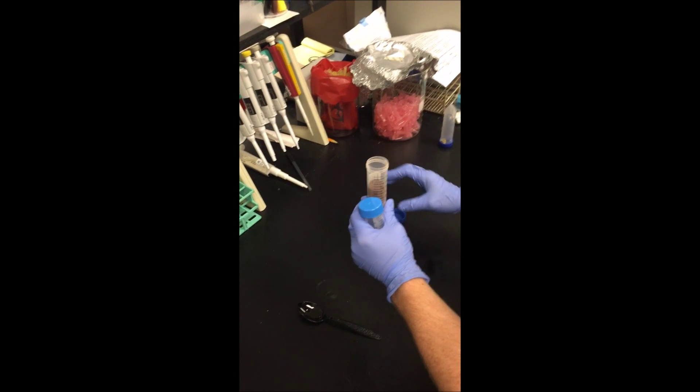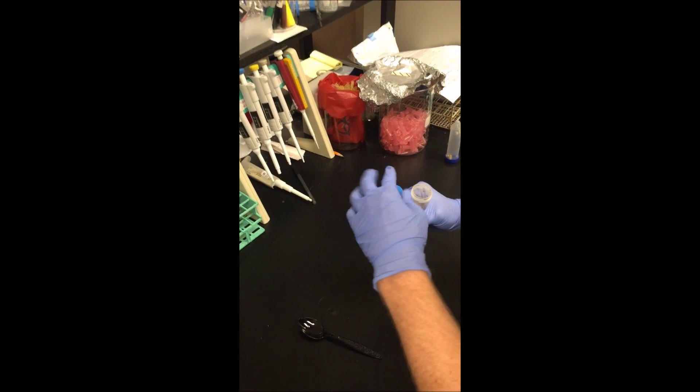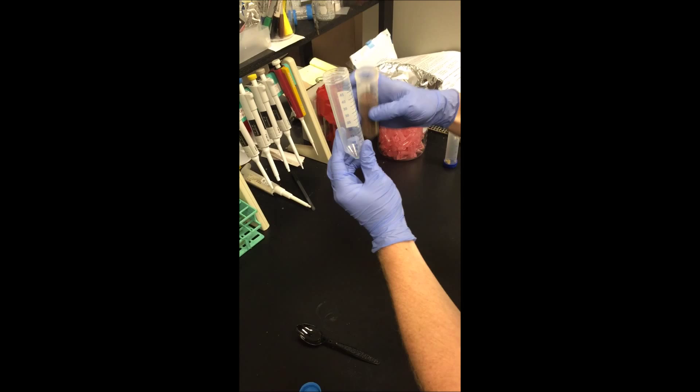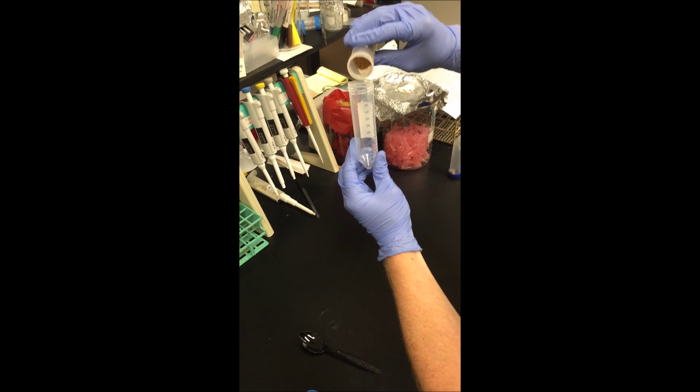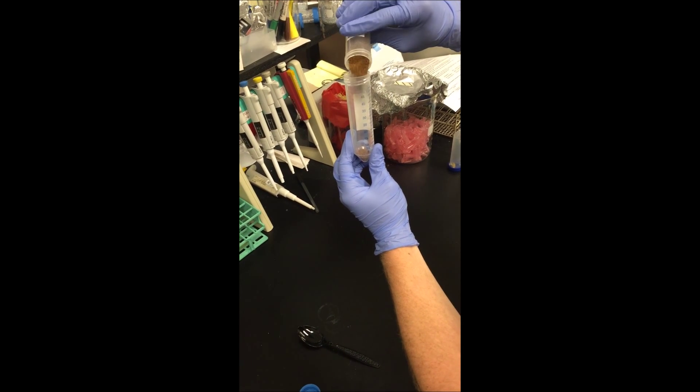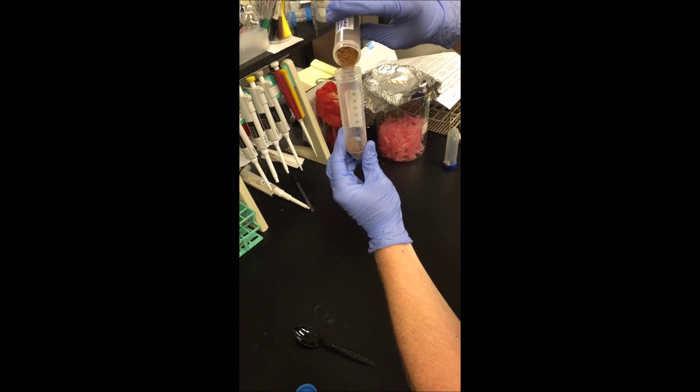Okay, so now we're going to show you how to prepare the soil slurry. You're going to start by adding five milliliters of soil to your fresh conical tube. So that's basically to the bottom line. We're going to show you the tapping method, just pouring it into the conical tube straight, or you could use the spoon that you're provided.